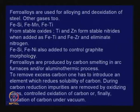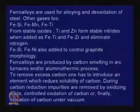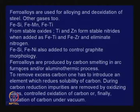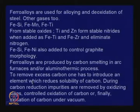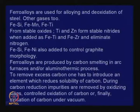Ferro-alloys can be produced by aluminothermic reduction — giving a ferro-alloy with no carbon — or by carbon smelting in arc furnaces, in which case carbides form and carbon must be removed. To remove excess carbon, one can introduce an element that reduces solubility of carbon, use oxidizing slags, use controlled oxidation of carbon, or use oxidation of carbon under vacuum. These are the three standard techniques for removing carbon from high-carbon ferro-alloys.